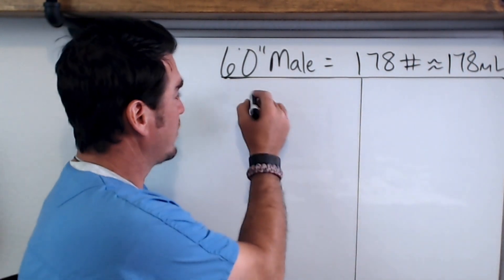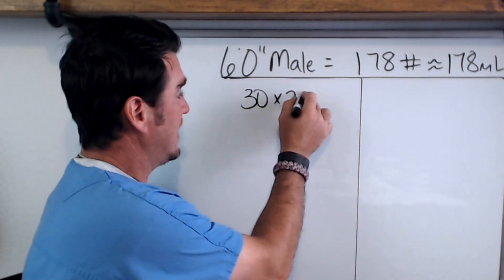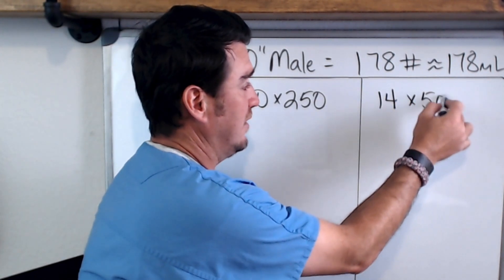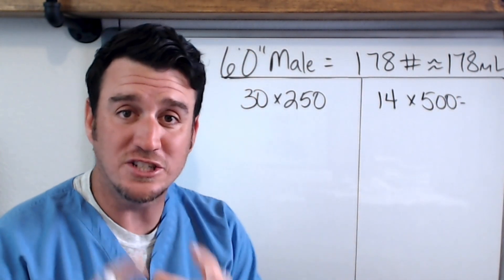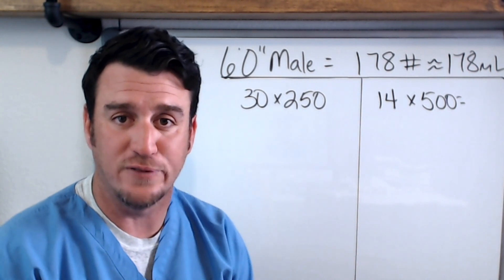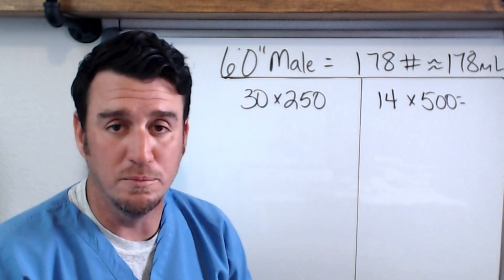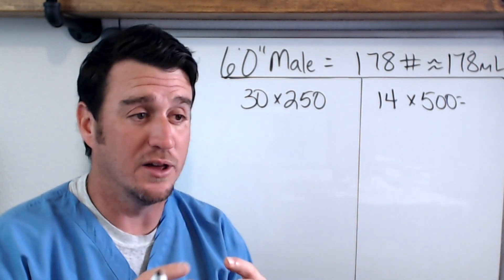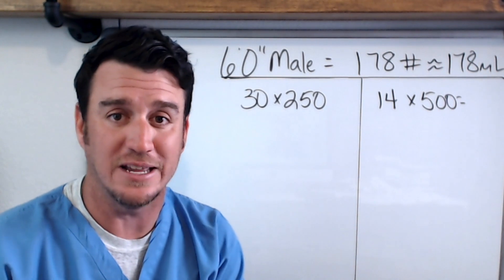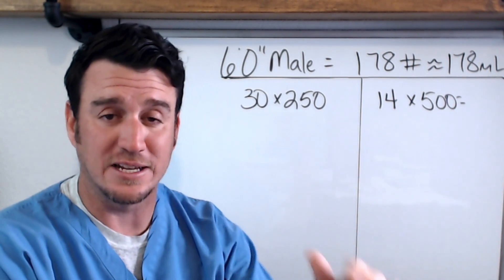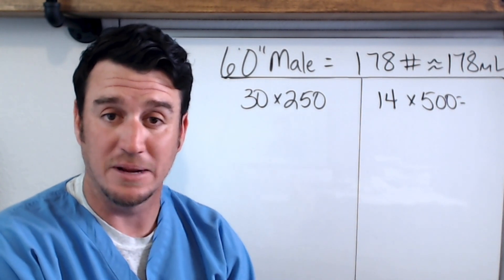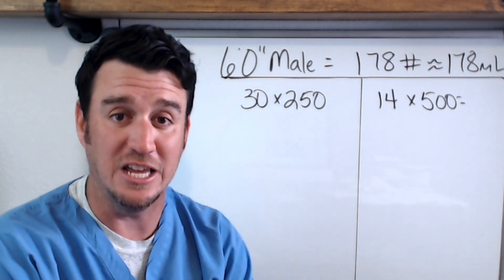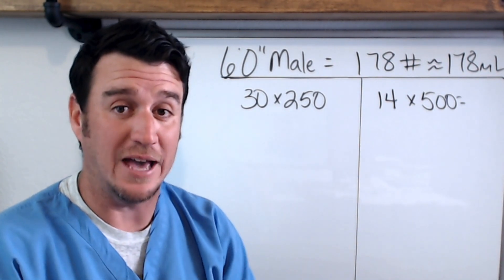Now let's make this come to life. We have the same patient in two different scenarios. Patient A is breathing 30 times a minute with a tidal volume of 250 ml. Patient B is breathing 14 times a minute with a tidal volume of 500 ml. The most fundamental formula you must understand as a respiratory therapist is minute ventilation, which equals respiratory rate times tidal volume.